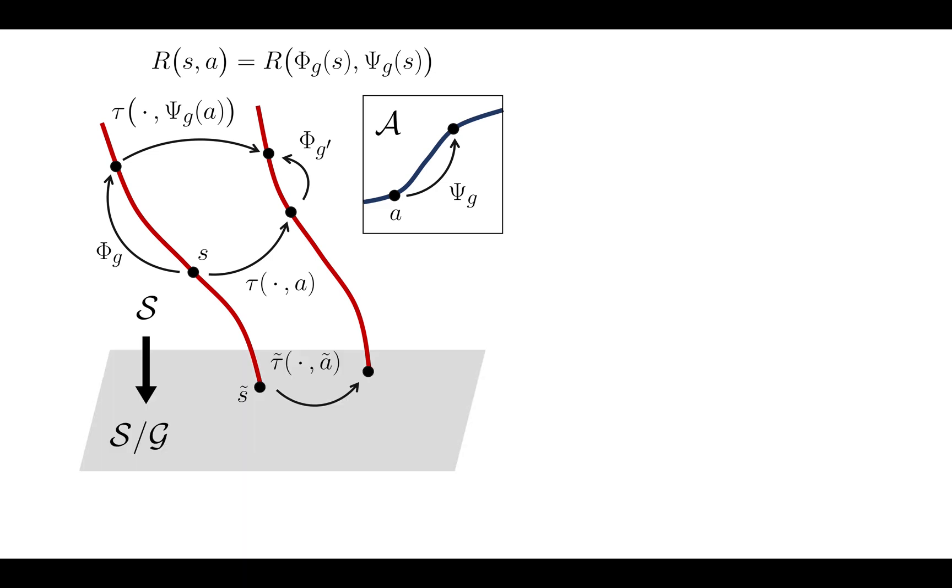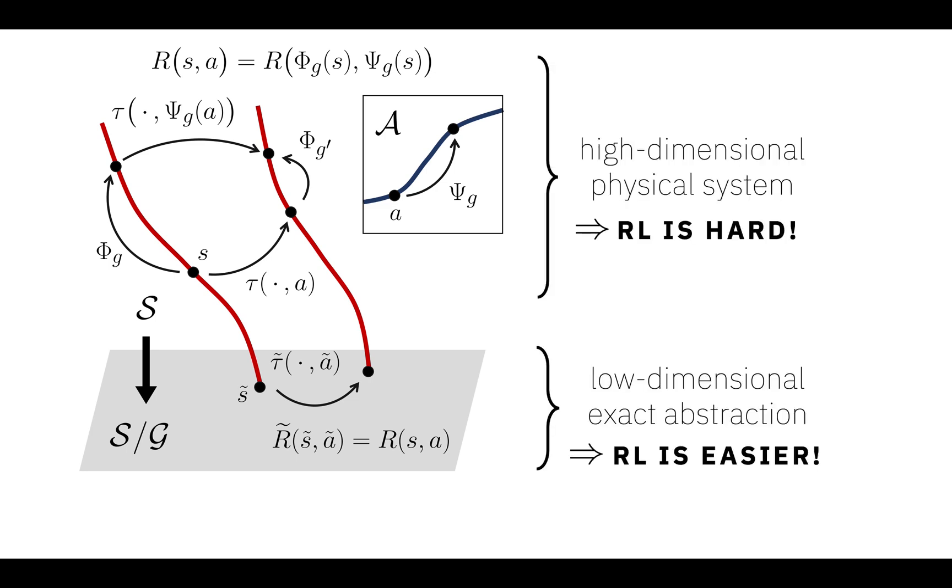We use these continuous symmetries to construct a continuous MDP homomorphism, exactly projecting the tracking control MDP to a lower dimension. The value equivalence and policy lifting results of Panagadin et al. imply that an optimal policy for the low-dimensional MDP downstairs can be lifted to an optimal policy for the high-dimensional MDP upstairs.